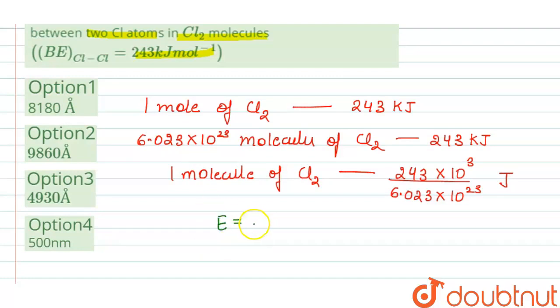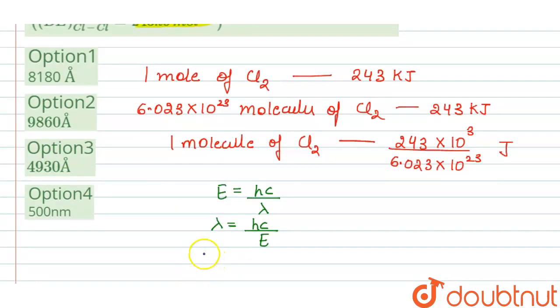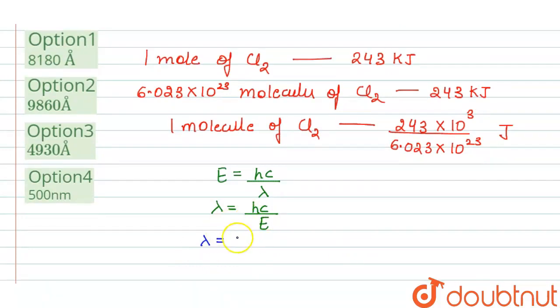So the formula which is used is E equals hc by lambda. So we have to calculate lambda, so it will be hc by E. Now we'll put the values, so lambda is equal to